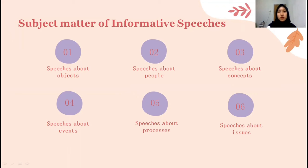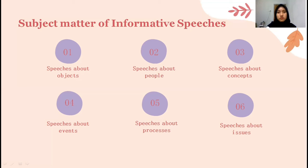Number five, speeches about process — this provides a step-by-step account of a procedure or a natural occurrence. For example, how to apply for a scholarship, how to explain your business, and so on. And last, speeches about issues — provides objective and balanced information about a disputed subject or matter of concern for society. For example, the impact of global warming or the impact of politics on the economy.